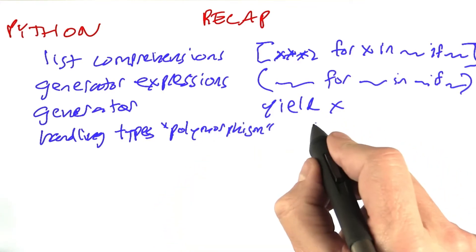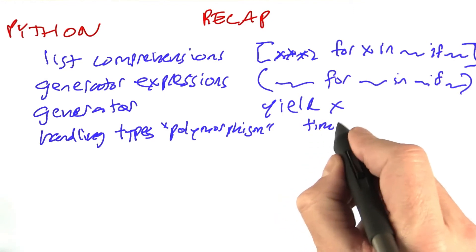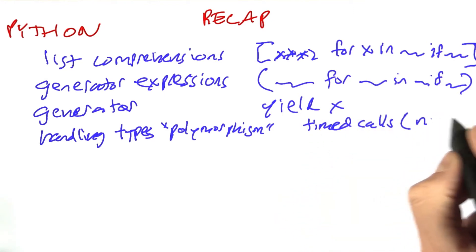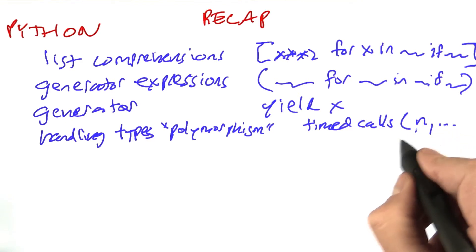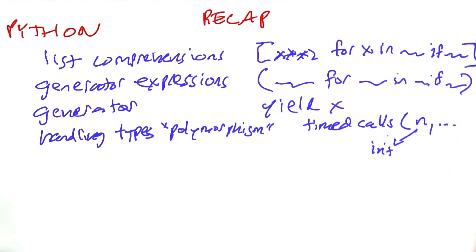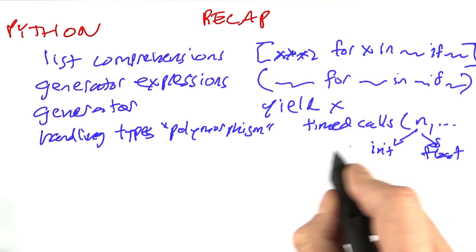We saw an example of that in timed calls where we said that the input n, and there are other inputs there, could be either an integer, in which case we would do one thing, or a float, in which case we would do something else, and we check which is which by using isinstance.